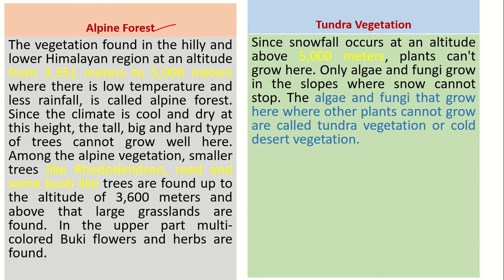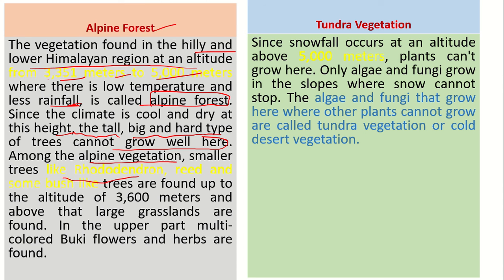The fourth type is Alpine Forest, found in the hilly and lower Himalayan regions at altitudes of 3351 to 5000 meters, where there is low temperature and less rainfall. Since the climate is cold and dry at this height, tall, big, and hard types of trees cannot grow well here. Among the Alpine vegetation, smaller trees like rhododendron and reed, and small bushes are found up to about 3600 meters, and above that large grasslands are found. In the upper part, multicolored flowers are also found.